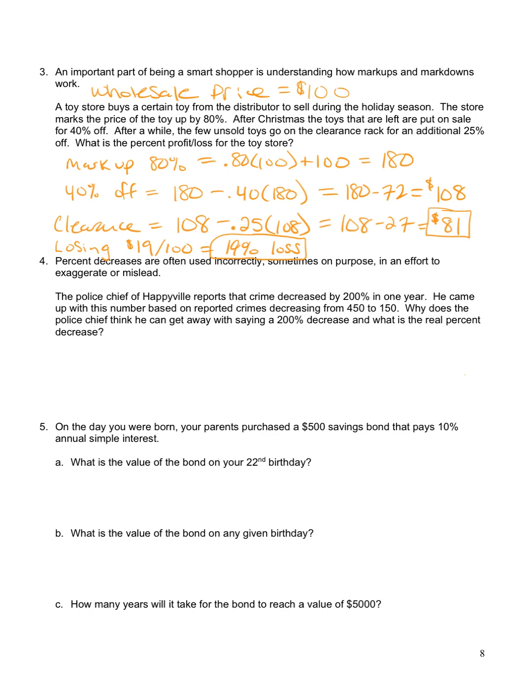So the percent decrease is certainly not 200% because the most you can decrease something by, percentage-wise, is 100%. If you decrease by 100%, 100% of it is gone. Okay, so a 100% decrease in crime would mean that there is no more crime. You can't decrease more than that. Okay, so it's not a 200% decrease. The actual percent decrease would be the change, so 450 minus 150, compared to the original amount, 450. So that would be 300 over 450, and that comes out to two-thirds, or 0.667, which is 66.7% decrease.